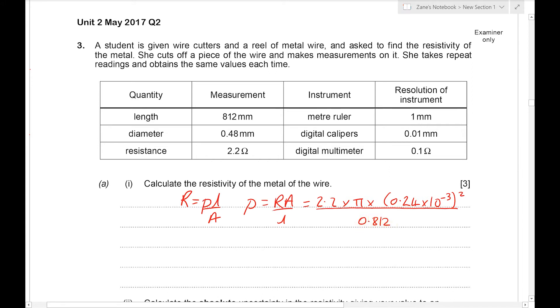That needs to be in meters. So either 812 times 10 to the minus three or 0.812. Put those numbers into the calculator. We get 4.9 times 10 to the minus seven.